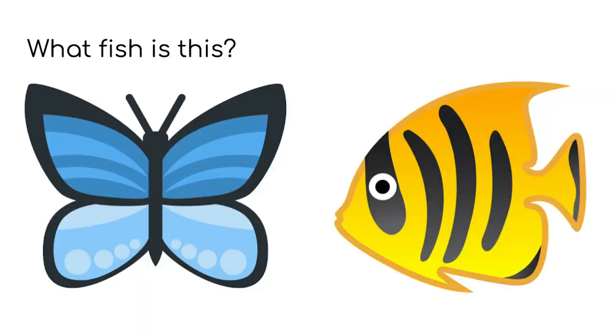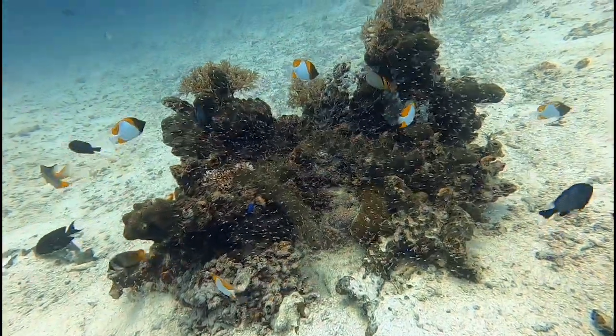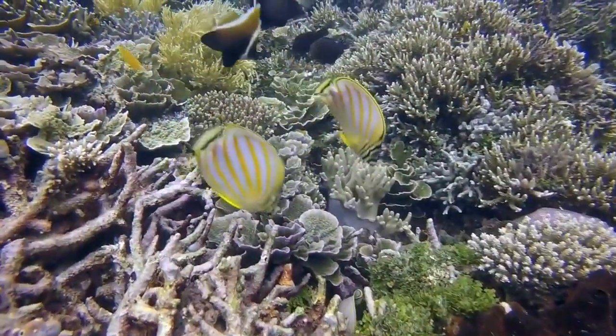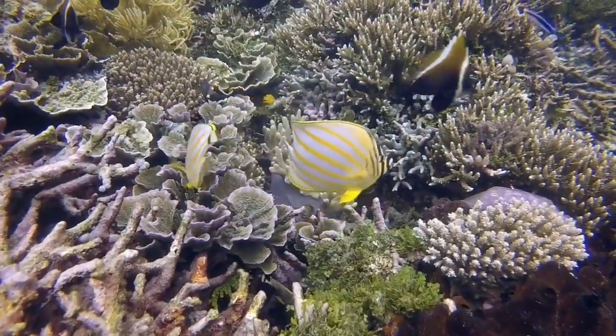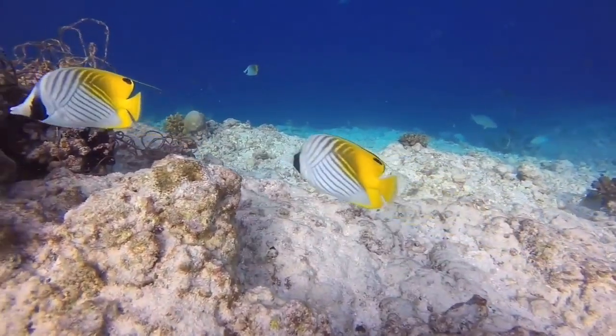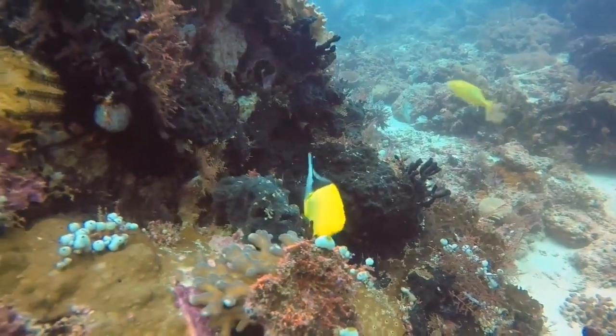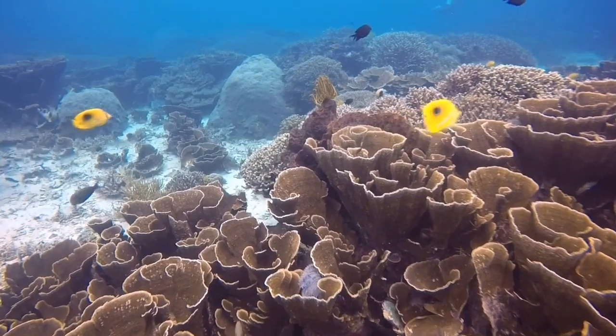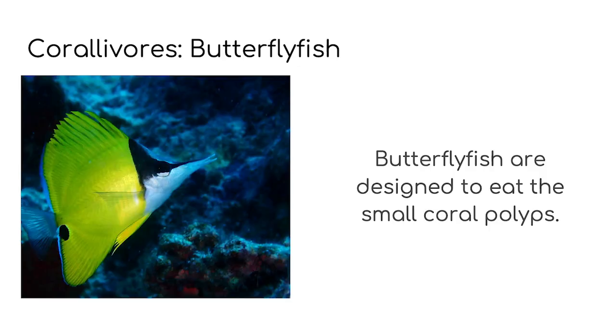Corallivores eat coral — the clue is in the name. This fish is a butterfly fish. There are over 120 species of butterfly fish around the world. They get their name from their amazing patterns, just like butterflies. They usually like to live in shallows between the surface and about 30 metres deep, which is almost the same height as two double-decker buses on top of one another. They often stay by themselves when they're younger. Butterfly fish have small pointy mouths which are designed to help them eat little coral polyps. They are also known to eat small crustaceans like tiny crabs or shrimp.